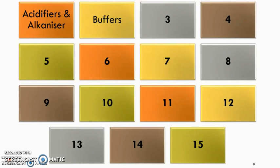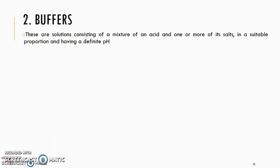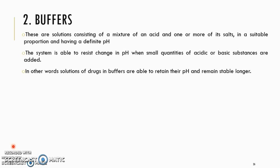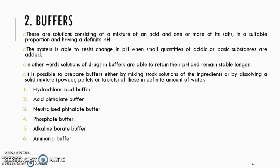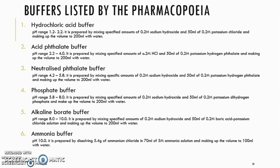The second pharmaceutical aid is buffers. Buffers are a solution consisting of a mix of an acid and one of its salts, and are used to maintain the pH of a certain solution. When the pH is maintained, it can help to make the drug more stable and last longer. Buffers can be prepared by dissolving any of these substances in a definite amount of water, and the table shows the pH range maintained for each buffer.